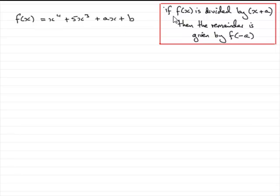Now to do this you've got to use the remainder theorem which I've got here that if f of x is divided by x plus a, then the remainder is always given by f of minus a.